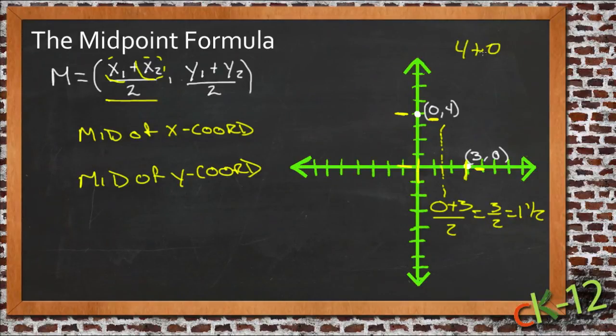Well, 4 over 2 is 2, so that tells us that the average of the y coordinates is at 2. So for our line right here, if we have a line that runs across...